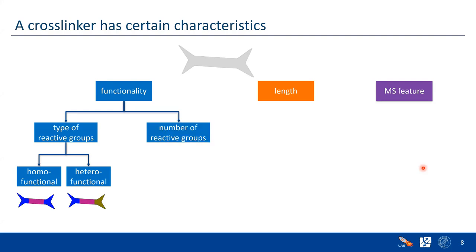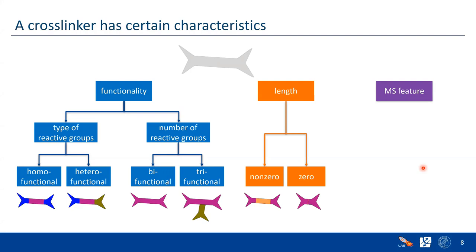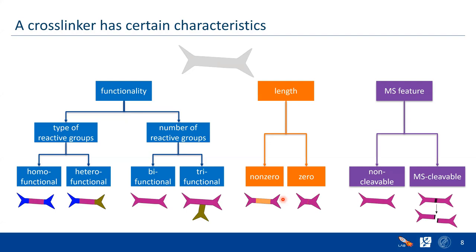We could have different reactive groups with two arms — bifunctional — or three arms, where the third arm is usually used for enrichment before MS analysis. In terms of length, we have two reactive groups with a carbon chain between them, making them non-zero, meaning the reactive ends are a certain distance apart from each other. It could also be zero, meaning they are directly adjacent to each other.